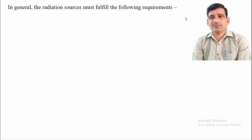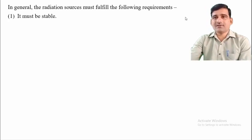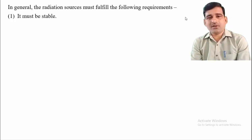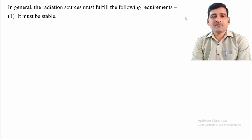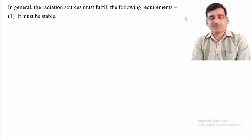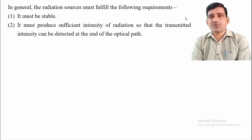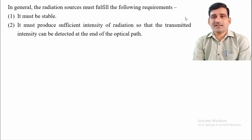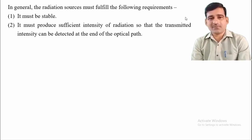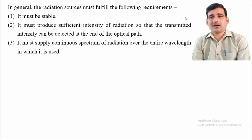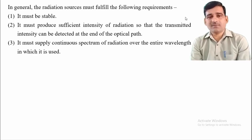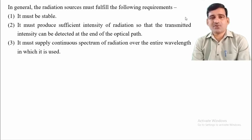In general, the radiation source must fulfill some requirements when used in ultraviolet and visible spectrophotometry. First, it must be stable to provide a continuous spectrum. Second, it must produce sufficient intensity of radiation so that the transmitted intensity can be detected at the end of the optical path. Third, it must supply a continuous spectrum of radiation over the entire wavelength range in which it is used.